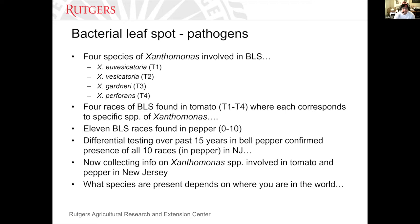In tomato, there are at least four races — T1 through T4. T1 type 1 is usually diagnostic of uvesicatoria, type 2 vesicatoria, and so on. In bell and non-bell peppers it's a different story — there are at least 11 known races of the pathogen. Differential testing over the past 15 years in New Jersey by Wes Kline and myself has confirmed we've found all 10 races in pepper in southern New Jersey, and down in Florida and other warmer areas they have all 10 races as well.